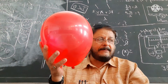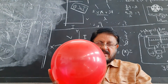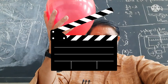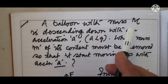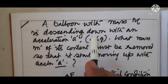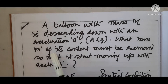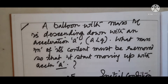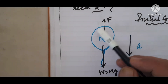This mass we are going to take as capital M. It is descending. How much mass is to be removed so that it will go up? The question is: a balloon with mass capital M is descending down with an acceleration A, where A is less than small g. What mass small m of its content must be removed so that it starts moving up with an acceleration A? That is the initial condition.